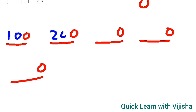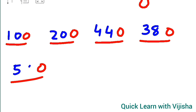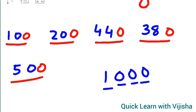I will write: 100, 200, 440, 380, 500. But don't write 1000, children, because that becomes a 4-digit number and would be wrong. I hope you are understanding. Thanks for watching my video. Thank you, students.